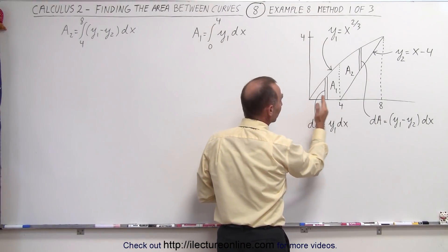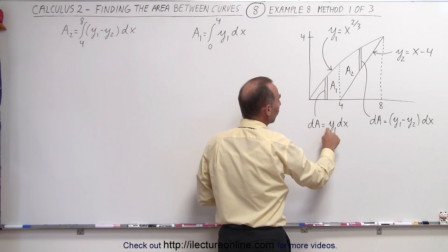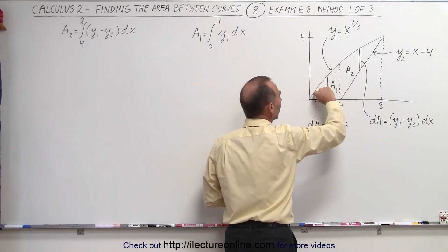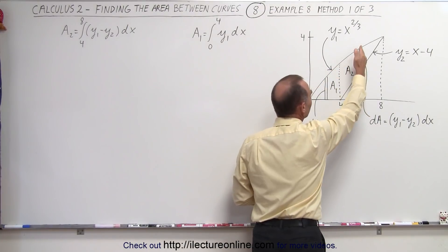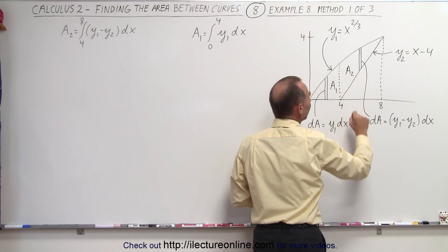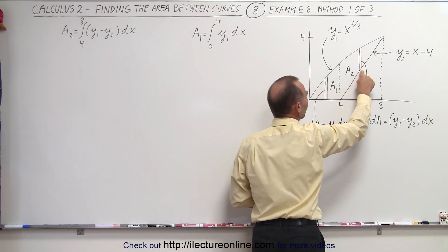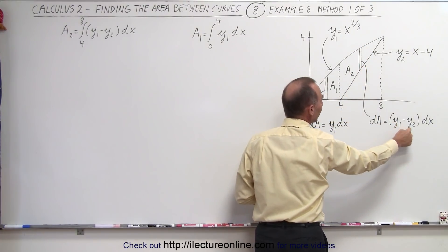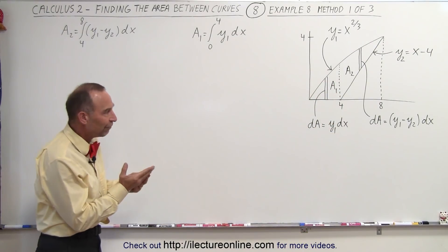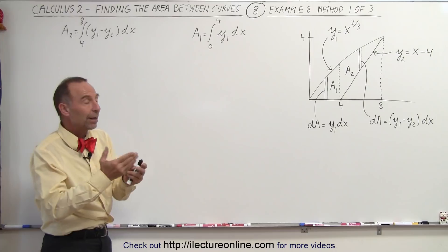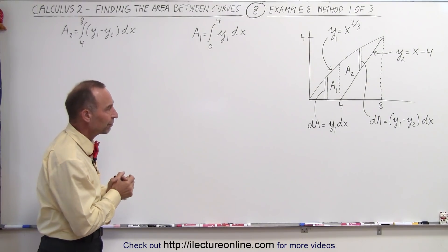Over here between x equals 0 and x equals 4, the area element dA is going to be equal to y times dx, where y is simply the height of the curve. But if we take an area element between the two curves, then dA is going to be equal to the difference of the heights — y1 minus y2 — times the width dx. Because the area elements are different, you'll have to integrate two separate times with different dAs and therefore two different functions.